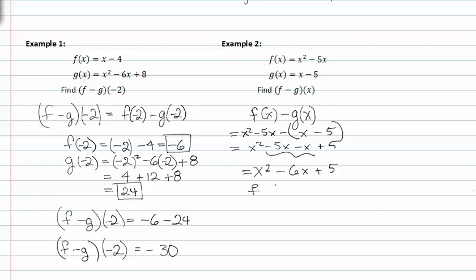So f minus g of x is equal to x squared minus six x plus five.